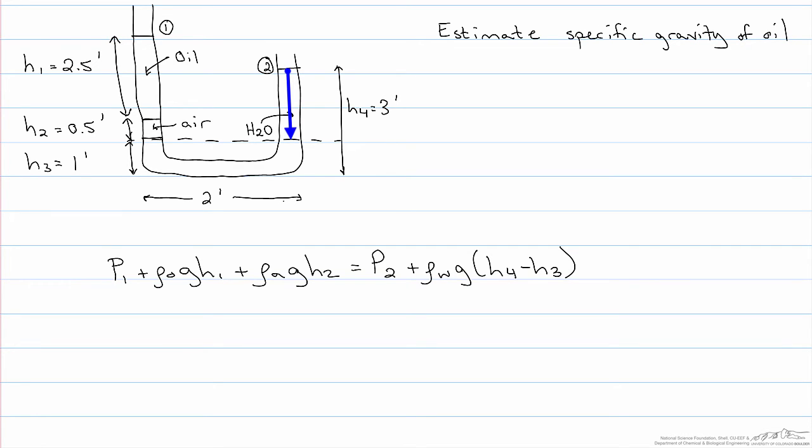Notice I'm first writing everything in terms of variables and only at the end will I plug in the values and the units. Another assumption often made in manometer problems is that the densities of gases are much lower than the densities of liquids, and we will make that assumption in this case. This allows us to neglect the density of air term.